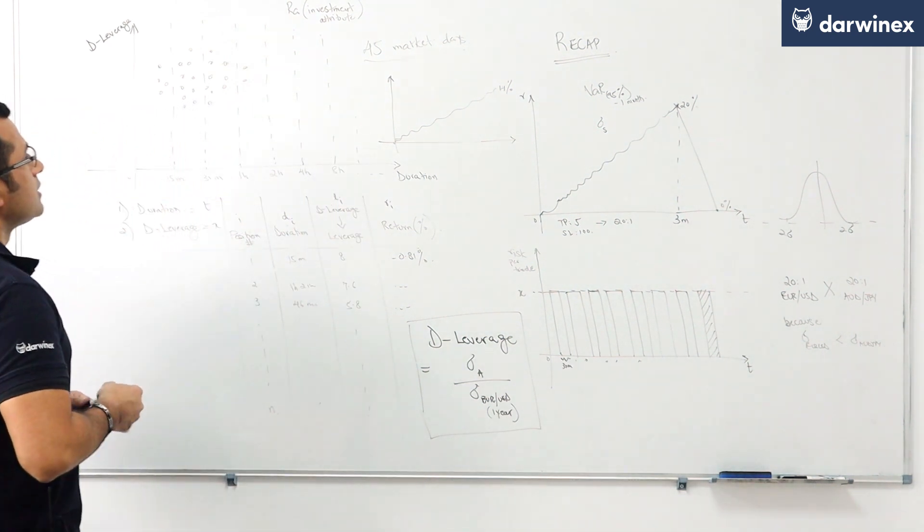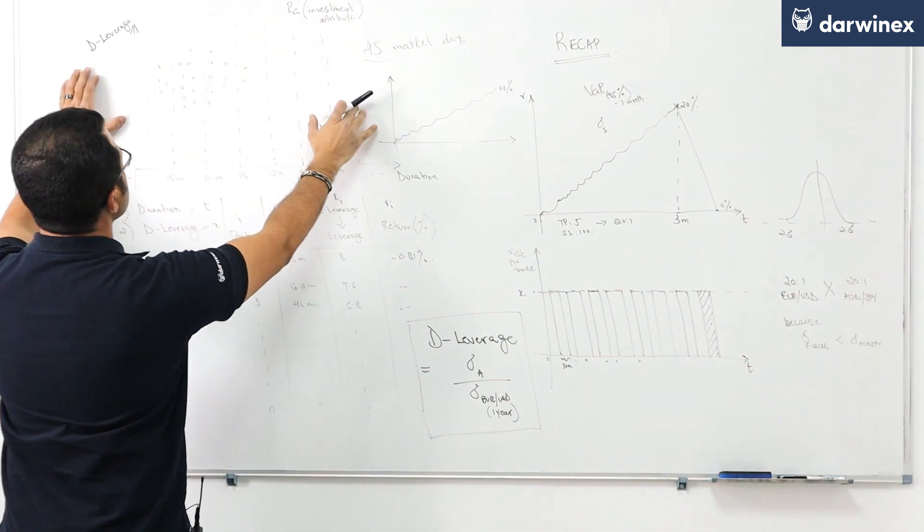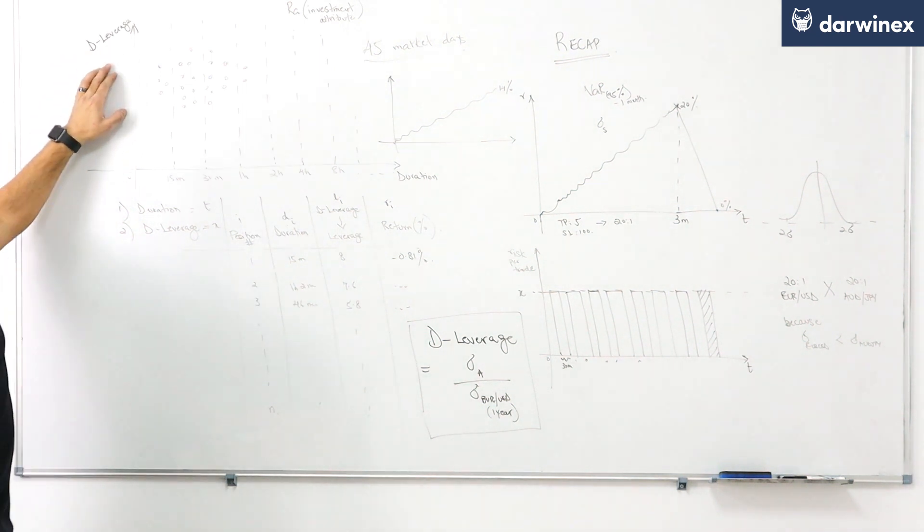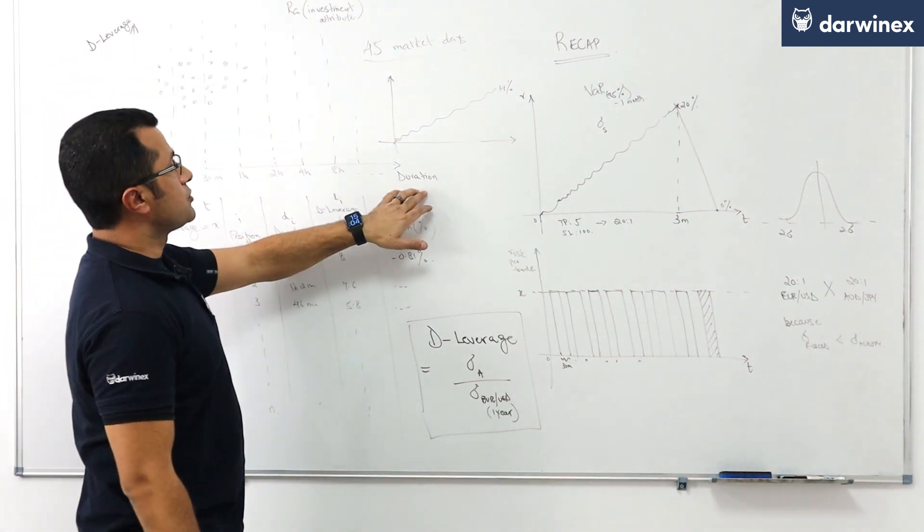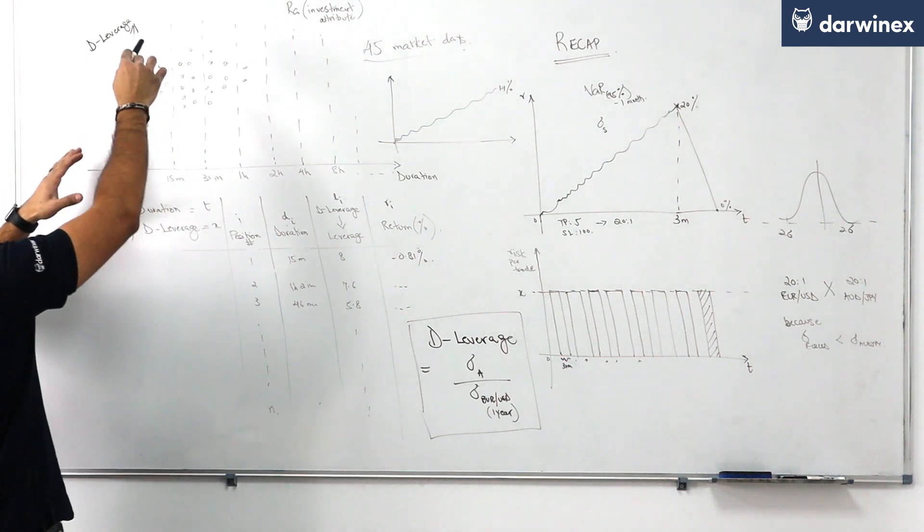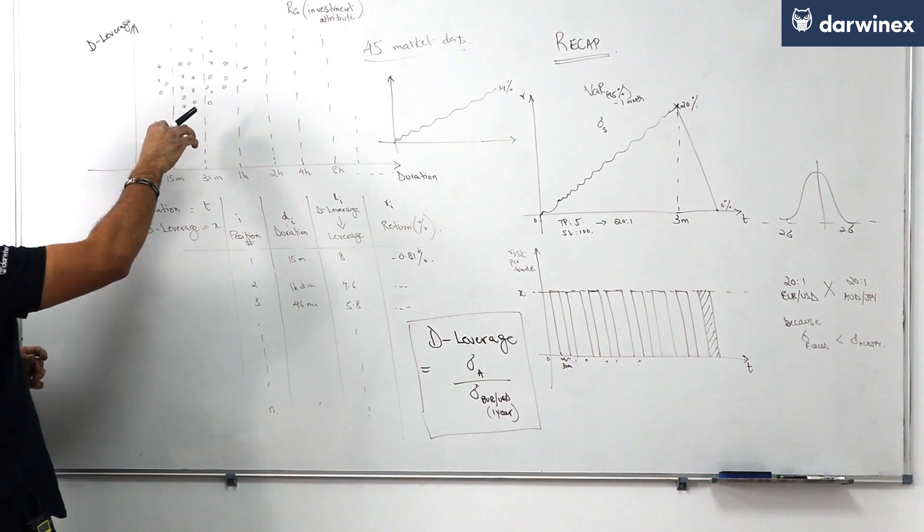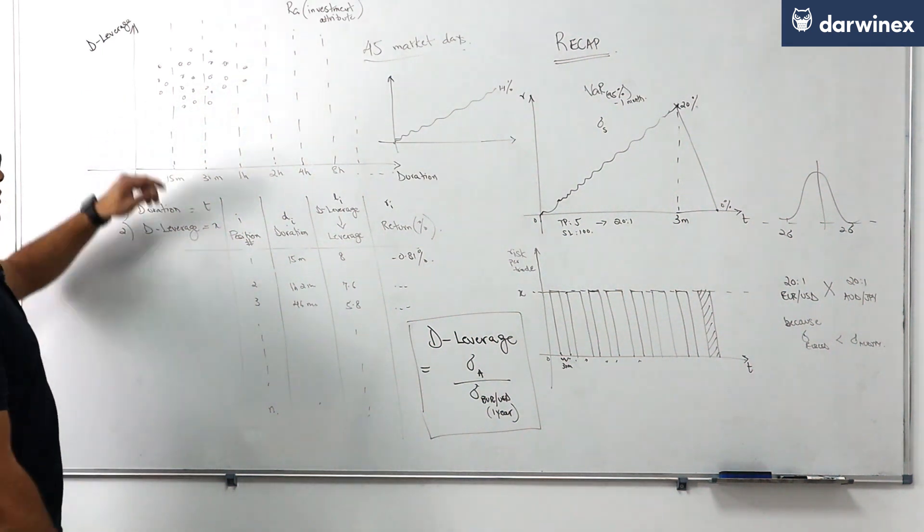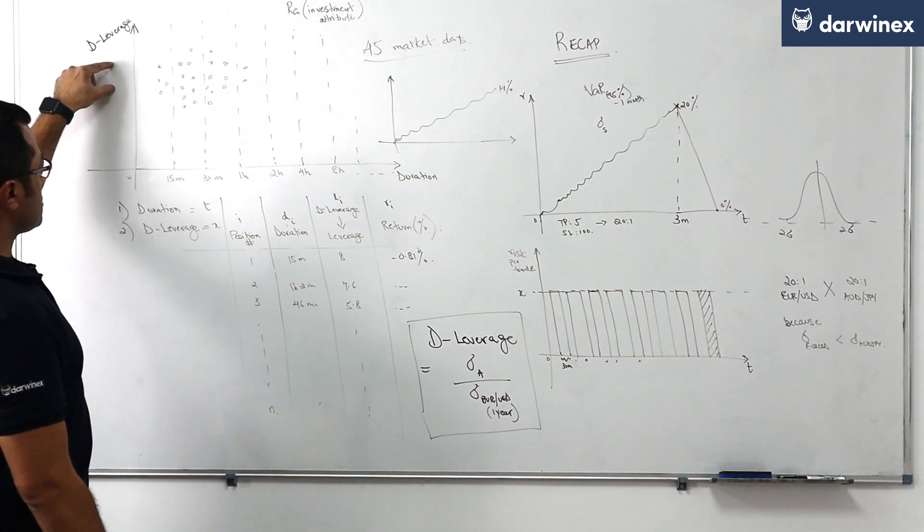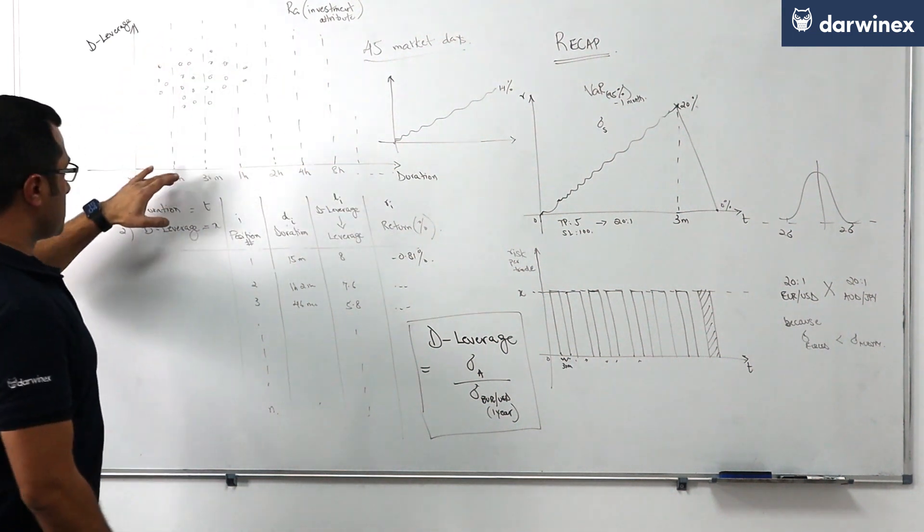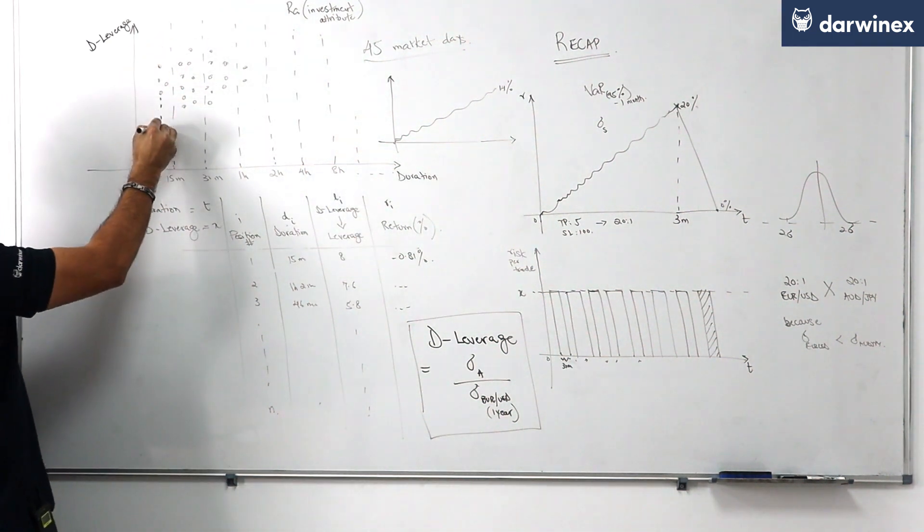Once you click on this you arrive at a chart that looks like this where the y-axis is deleverage and the x-axis is duration and the chart is divided into fixed time intervals and each bubble that you see on this chart represents a position of deleverage this much and duration this much depending on where that position is on the chart.